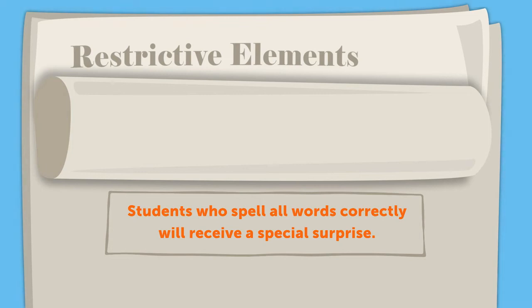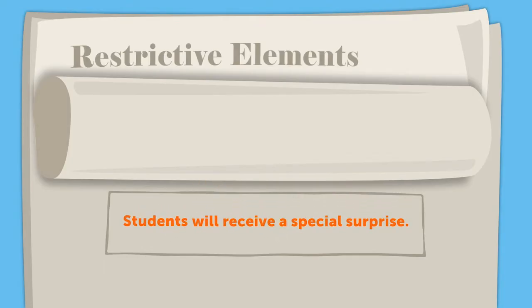This sentence contains a restrictive element: "Students who spell all words correctly will receive a special surprise." The phrase "who spell all words correctly" is a restrictive element. Notice that there are no commas in the sentence. Removing the clause would change the meaning of the sentence — it would now imply that all students will receive a special surprise instead of only those who spell all words correctly. Therefore, the clause is essential to the sentence.